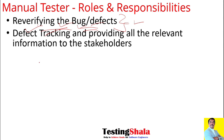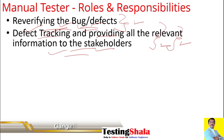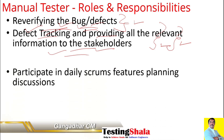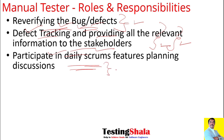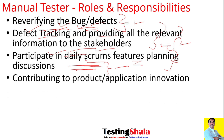Once developers fix the issues, the manual tester's job also includes re-verifying those bugs and defects. It is also the responsibility of the manual tester to provide all relevant information related to any bug or defect in the system to the developer or stakeholder. Additionally, if working in an agile model, you are required to attend daily stand-up meetings regularly.